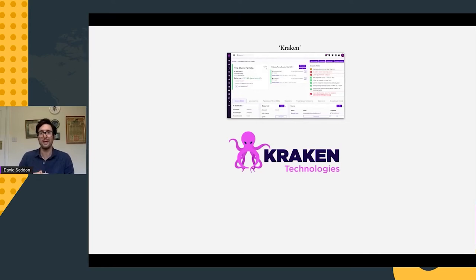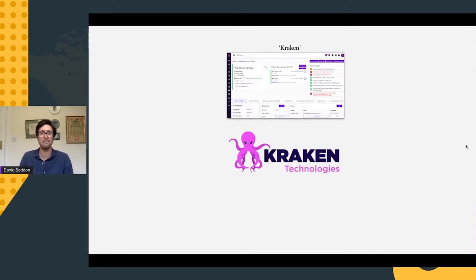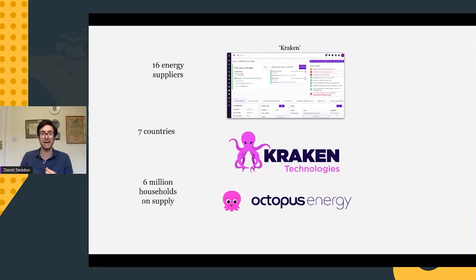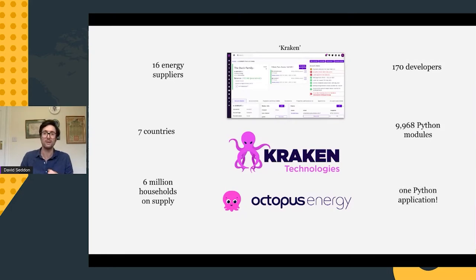A bit about me: I work at Kraken Technologies, based in the UK. Our product is called Kraken — software for energy suppliers to run their business. Kraken came out of Octopus Energy and has expanded to support 16 energy suppliers in seven countries, with six million households on supply. There are about 170 developers and nearly 10,000 Python modules, all in one Python application.